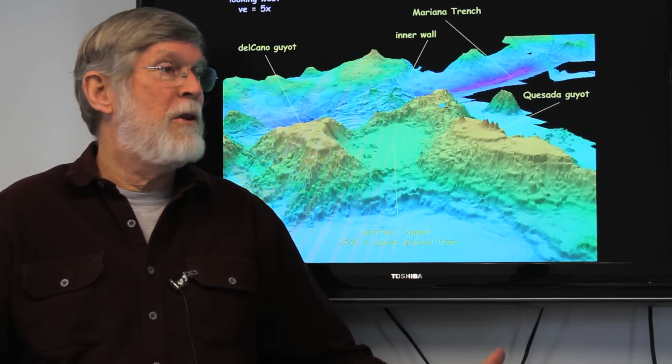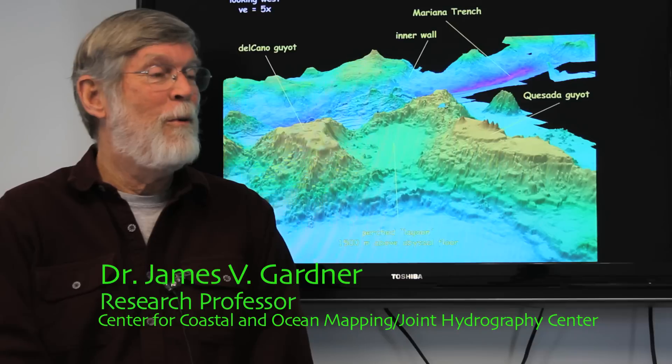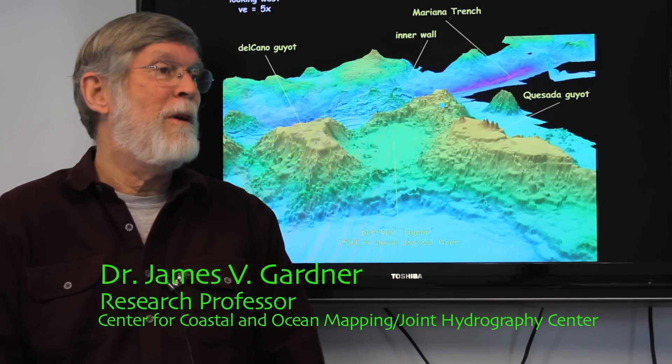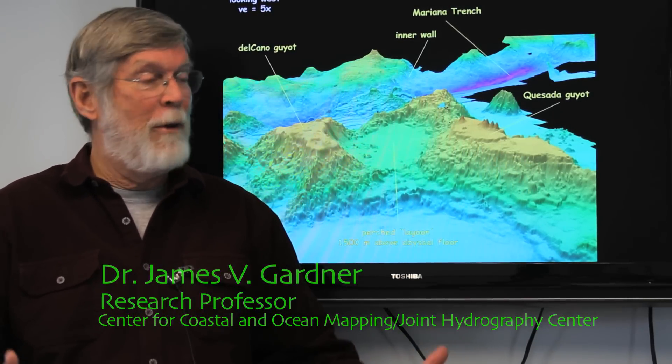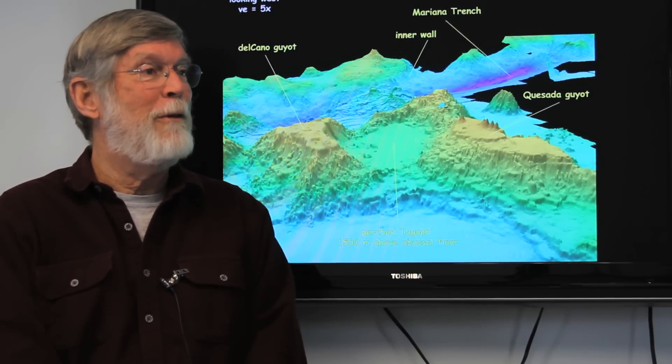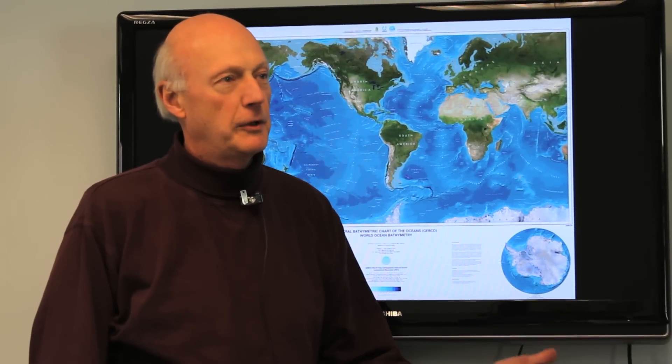We need to map the ocean because it's totally unmapped. We don't know what's there. Every time we map it, we find something new. It's our Earth. It's where we live. It's 70% of the surface of the Earth. By mapping it, we understand what's there better, and we get a sense that it's a real place rather than some vast bathtub full of water that sort of has no end.